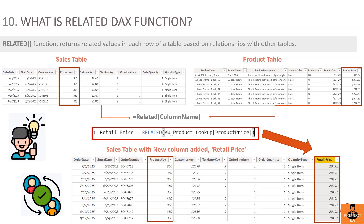Question 10: What is the RELATED function in Power BI? The RELATED function returns related values in each row of a table based on relationships with other tables. It retrieves the column that contains the values an analyst wants as per business requirements. In the example above, the analyst is pulling product price from the product table into the sales table as per the product key column. The new column added to the sales table is named retail price. Since there is just one product key captured in the sales table — which is 360 — the retail price is the same in all rows, which is $2049.10.